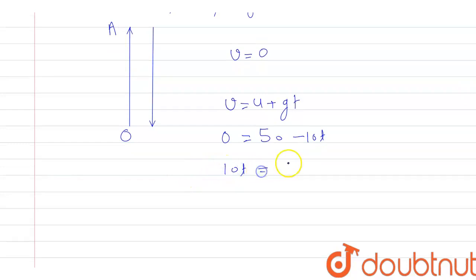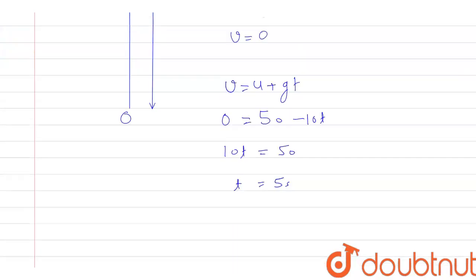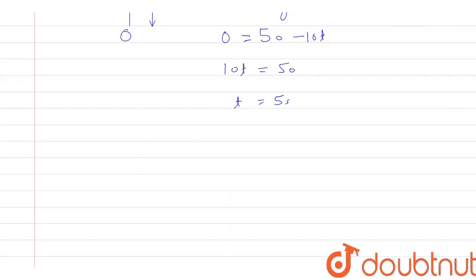And t will come out as 5 seconds. So this is the time of ascent, that means it is moving upward. The same time will be taken when it moves downward.